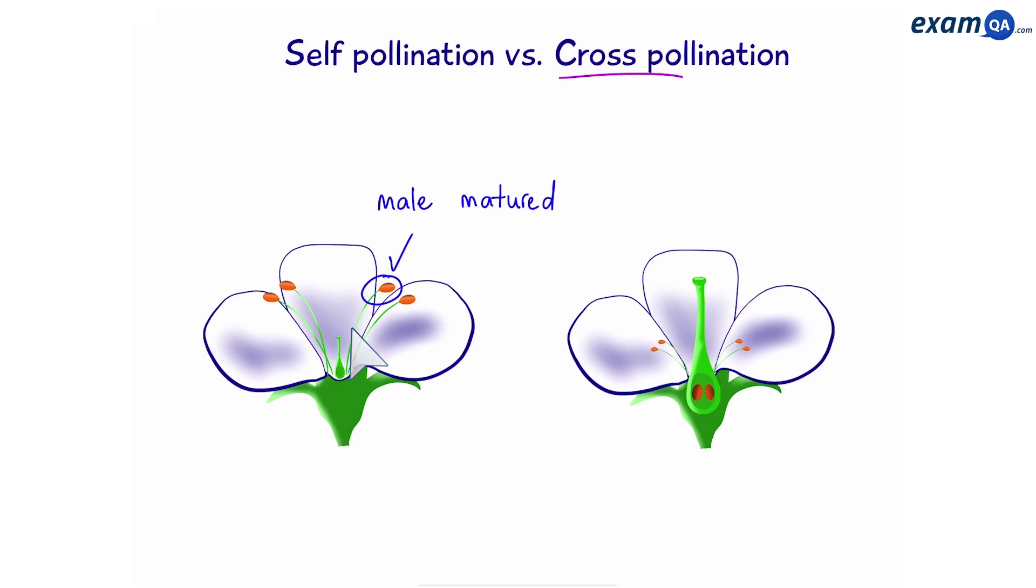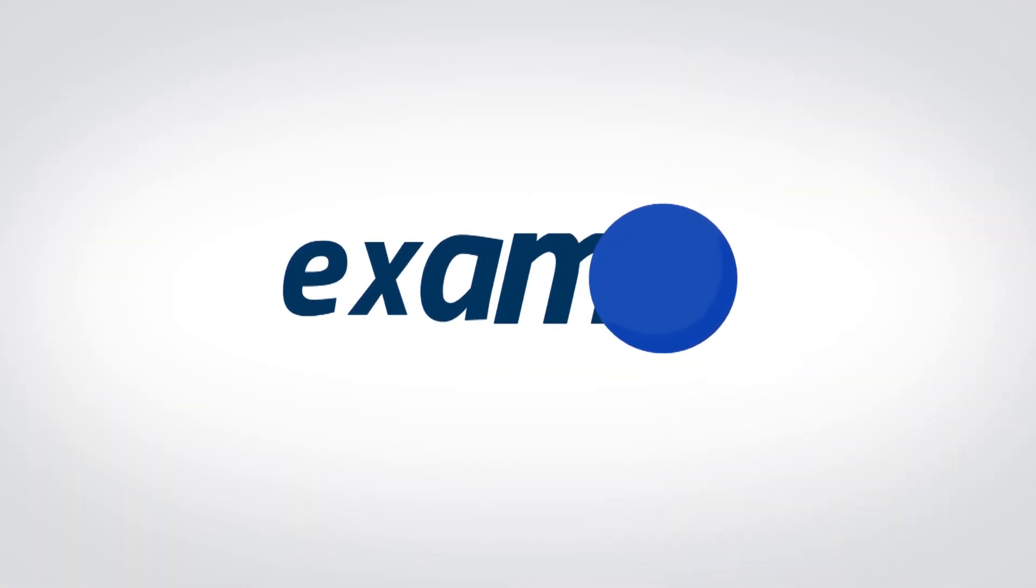For example, the male part on this flower is mature. However, the female part is not mature, so it can't pollinate itself. On the right, the female part is mature, but the male parts are not mature. So again, it can't pollinate itself, meaning that it will have to cross-pollinate.